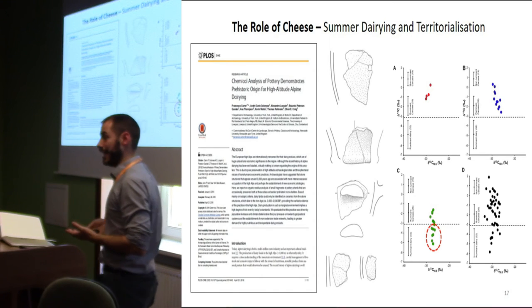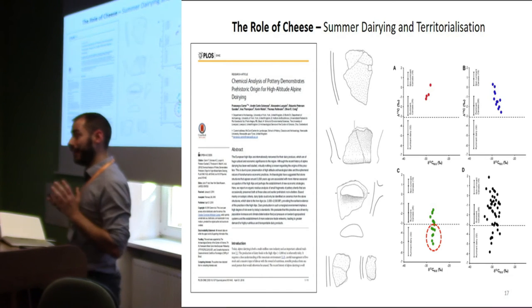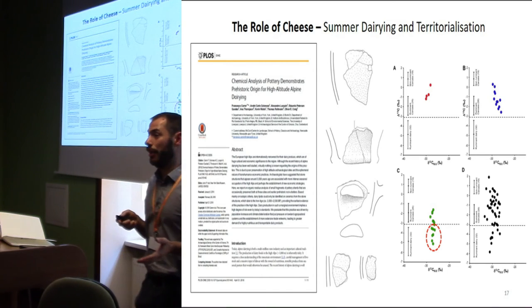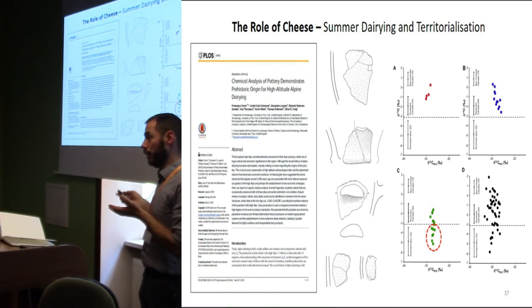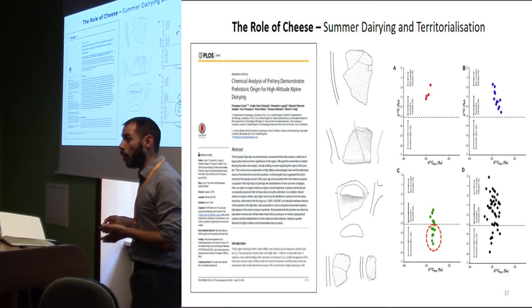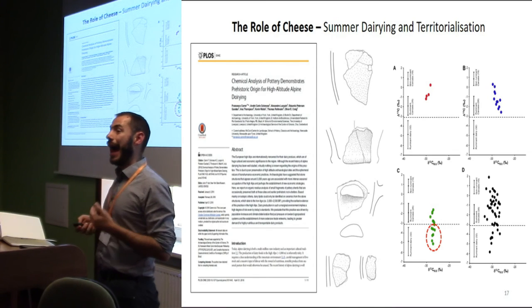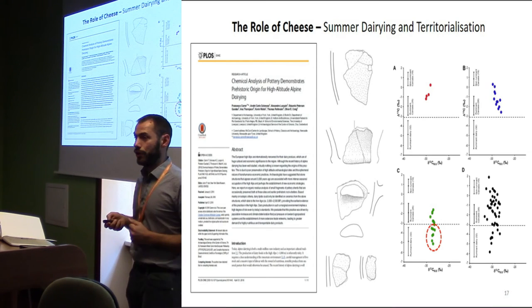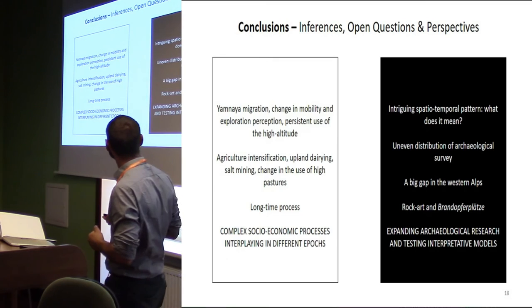Interestingly, all these potsherds come from dry stone structures. And the earliest dry stone structures in this area of Switzerland appear between the late Bronze Age and the early Iron Age. The hypothesis, then, is that there actually is a relationship between the origin of Alpine dairy production and the occurrence of dry stone structures.